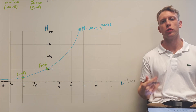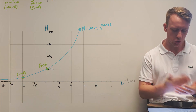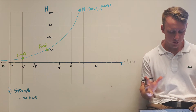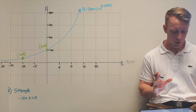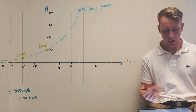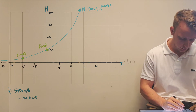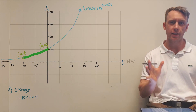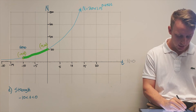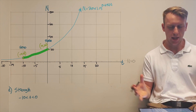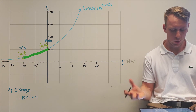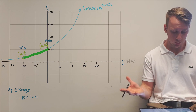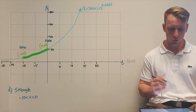Part d asks for the strengths and limitations of this model. A strength is that it's a good prediction between t equals negative 10 and t equals zero — that is, 2010 to 2020 — because we have direct observational data from that period. We can see actual growth happening, so the model is very reliable within that range.